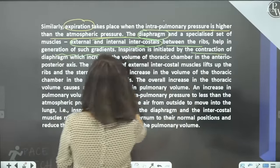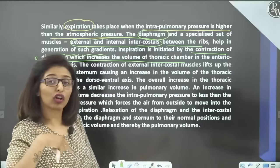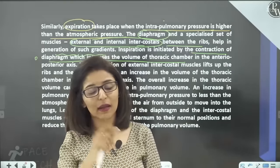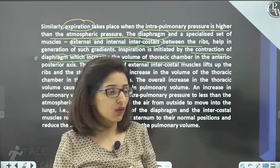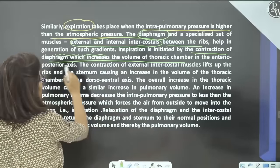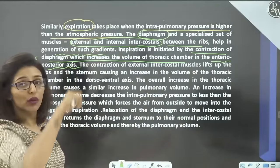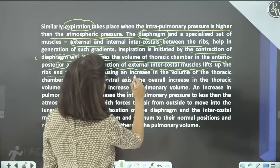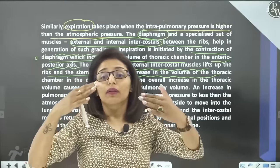Inspiration is initiated by contraction of the diaphragm, which increases the volume of the thoracic chamber. We must increase the volume inside because we need to decrease the pressure inside — pressure and volume are inversely related. The movement of the diaphragm increases volume along the anterior-posterior axis. Contraction of external intercostal muscles along with the ribs and sternum causes increase in thoracic volume in the dorso-ventral axis as well. Remember what UFO stood for — let me know in the comments!